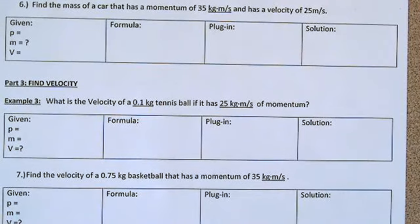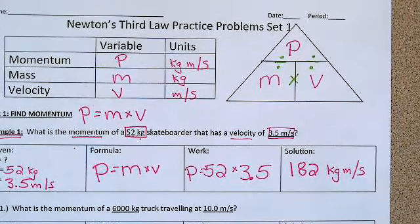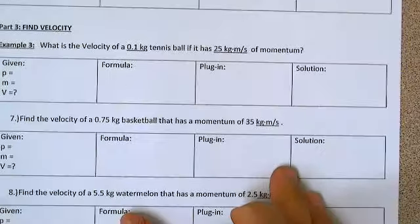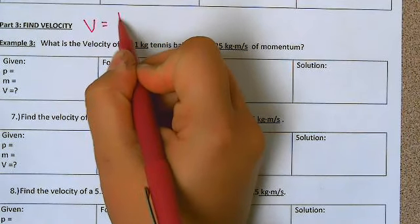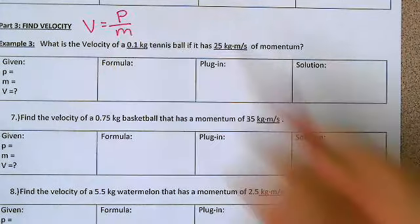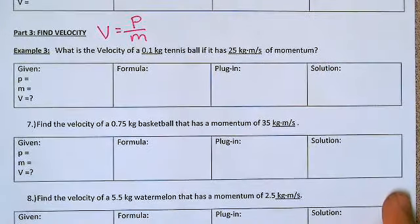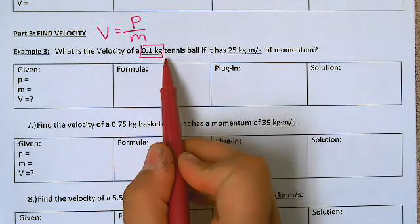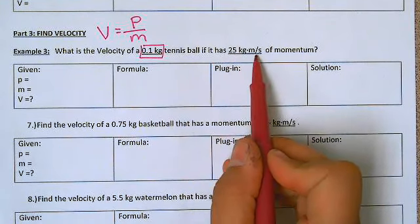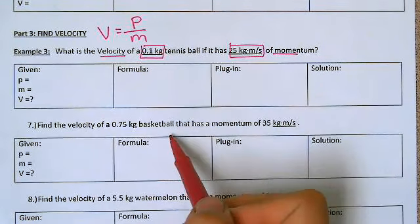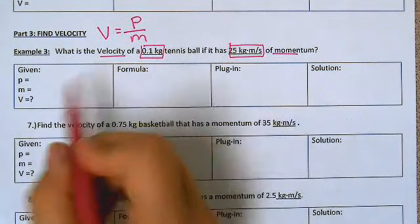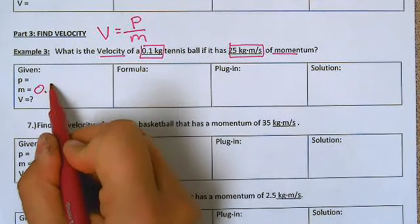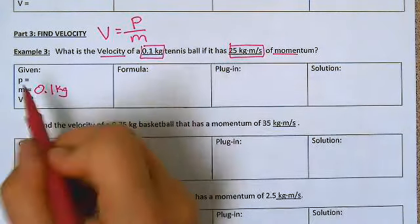For part three we're looking at finding velocity. When we're finding velocity we're going to do momentum divided by mass, so for all of section three the formula is: velocity equals momentum divided by mass. Let's look at example number three. It says: what is the velocity of a 0.1 kilogram tennis ball if it has 25 kilograms meters per second of momentum? The velocity V is what we are looking for. The 0.1 kilograms is the mass, and 25 is the momentum.